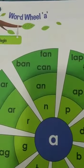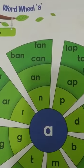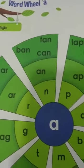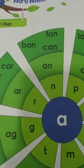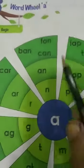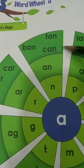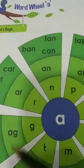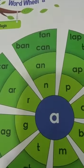Now children, we are going to learn word wheel A — meaning you are going to learn words that have the vowel A. This is word wheel A; the letter A is a vowel, and all the words around here will have the letter A in them.